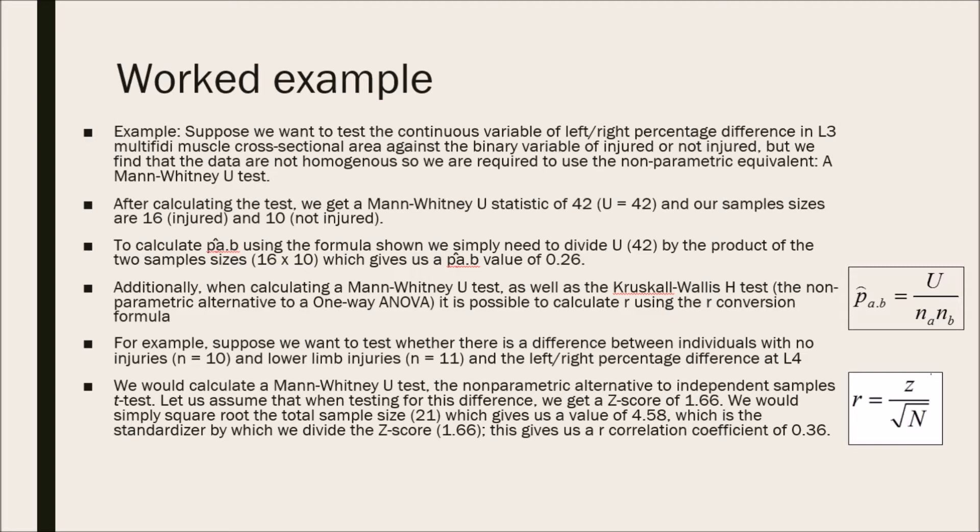Additionally, when calculating a Mann-Whitney U test, as well as the Kruskal-Wallis H test, the non-parametric alternative to a one-way ANOVA, it is possible to calculate r using the r conversion formula.